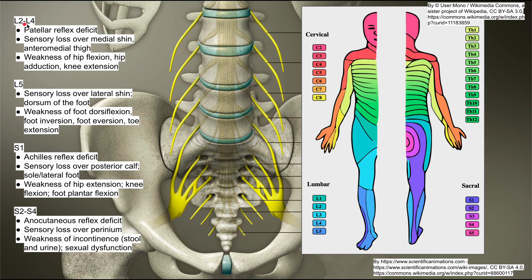Let's start with L2 to L4. If you have a radiculopathy of L2 to L4, you can expect a patellar reflex deficit — that's the doctor smacking the knee and the leg kicks forward. You'll have sensory loss over the medial shin and anteromedial thigh, which corresponds to those areas on the dermatome diagram. You'll also have weakness of hip flexion, hip adduction, and knee extension.